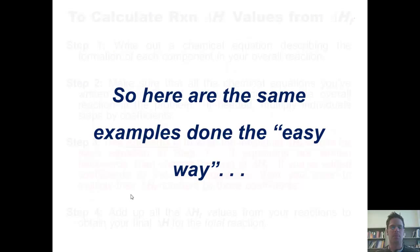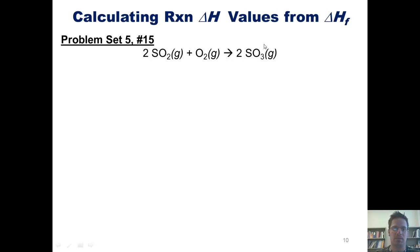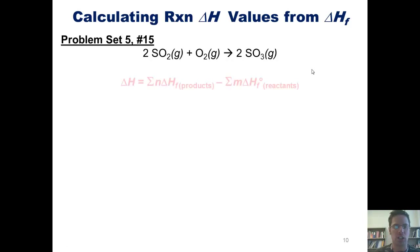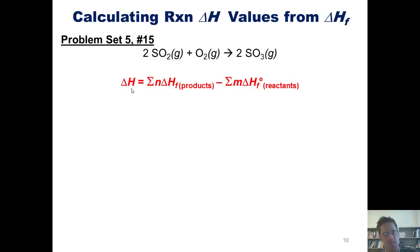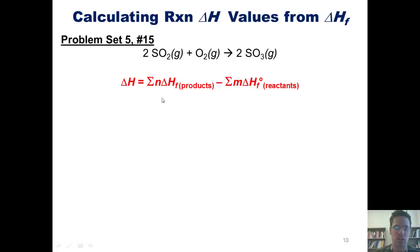Here are the same examples I showed earlier using the long way, now done using the easy way. First example: 2 moles of SO2 gas combining with 1 mole of O2 gas to form 2 moles of SO3 gas. The overall enthalpy for this reaction equals the sum of the individual enthalpy of formation of the product, minus the sum of the individual enthalpies of formation of the reactants, each multiplied by their respective coefficients n and m.